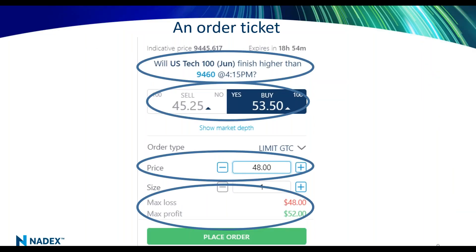You're getting the highest bid and lowest offer at that moment in time. And on that order ticket you'll also know an indicative price in the upper left-hand corner and the exact time left. This particular contract showed the NASDAQ indicative price at $94.45 — just slightly below the $94.60 level — which is why it's leaning below $50, with 18 hours and 54 minutes to go.